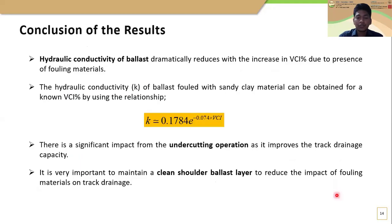With that, I move to the conclusions of the results. The hydraulic conductivity of ballast dramatically reduces with the increase in VCI percentage due to the presence of fouling materials. Also, the hydraulic conductivity of ballast fouled with sandy clay material can be obtained for any VCI percentage by using this relationship. Also, there is a significant impact from the undercutting operation as it improves the track drainage capacity, and it is very important to maintain a clean shoulder ballast layer to reduce the impact of fouling materials on track drainage.